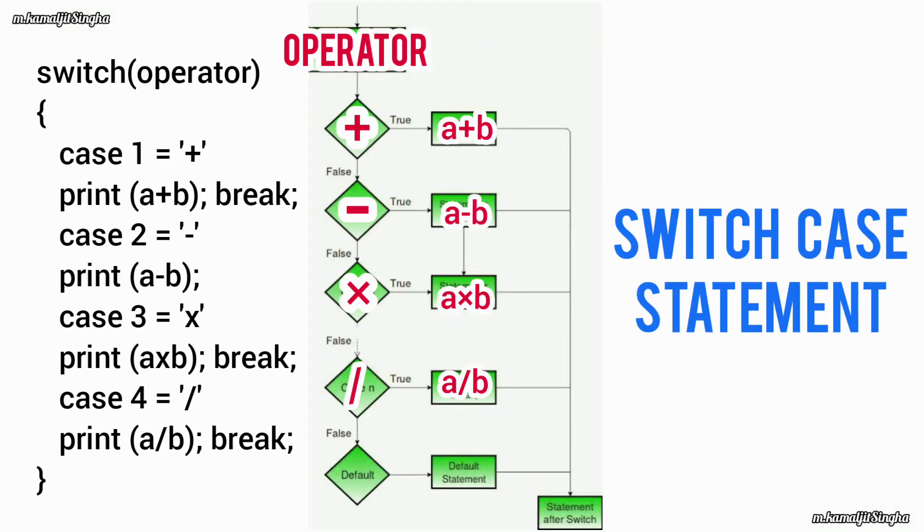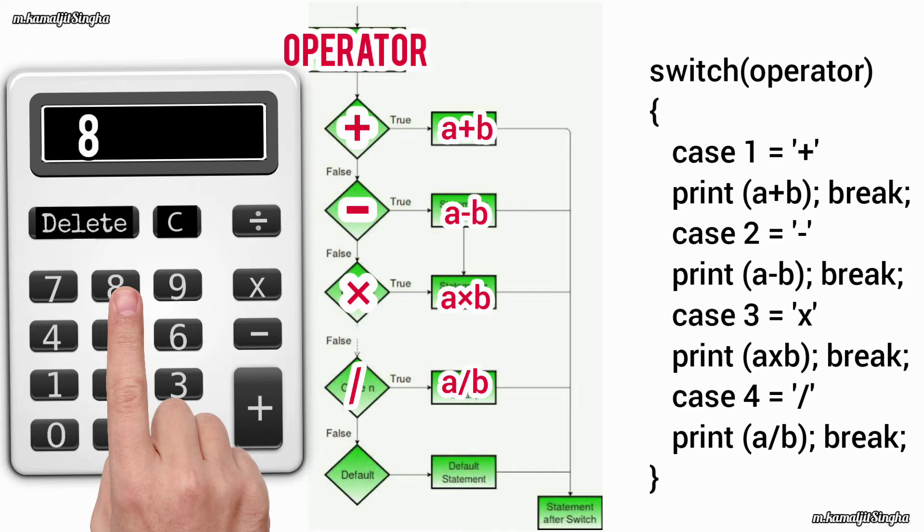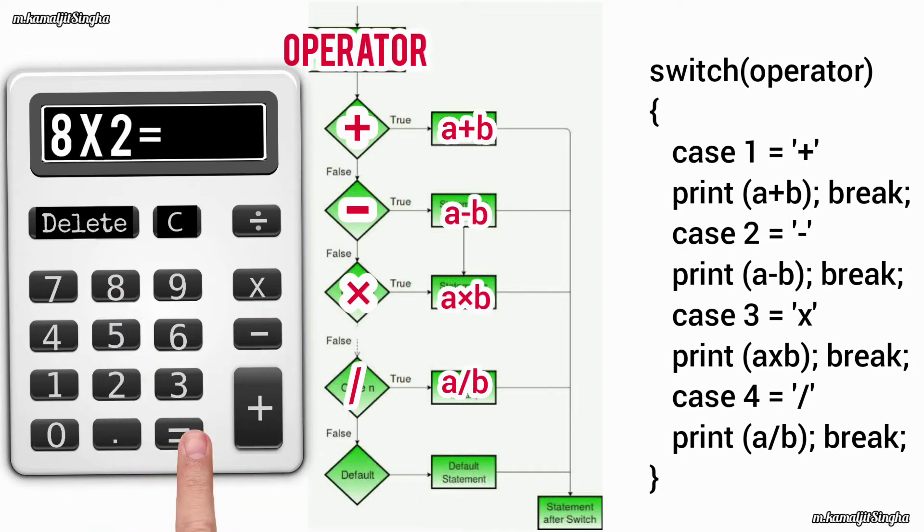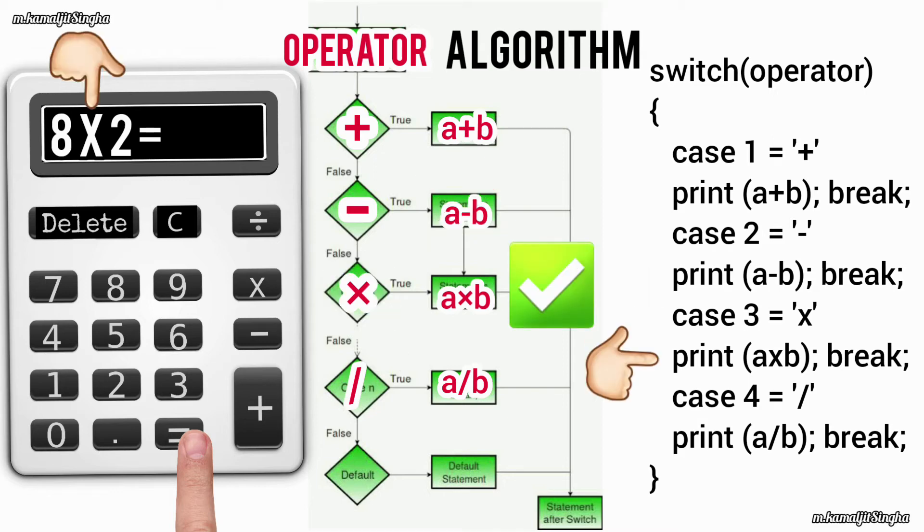When the user enters input from the calculator and presses the equal or enter button, the algorithm checks the first statement, then the second statement, then the third statement. When the algorithm finds the correct statement, it breaks the loop and displays the result on the screen.